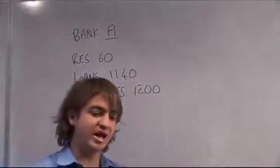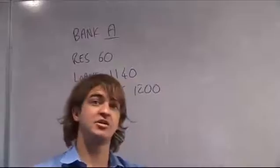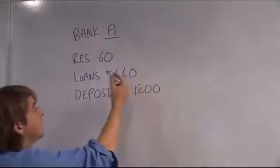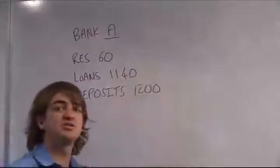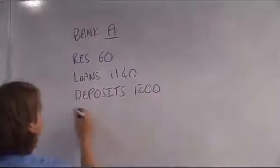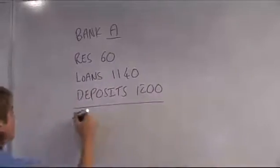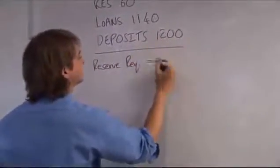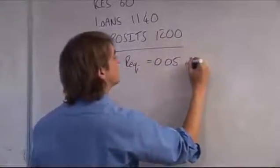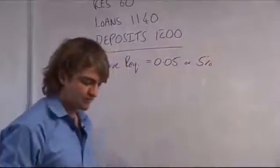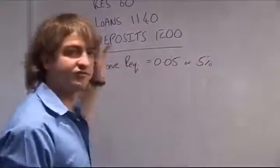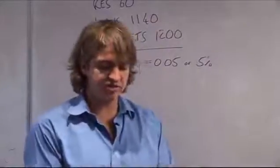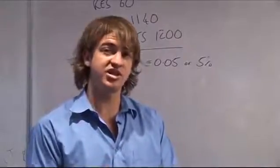So they have deposits of 1,200 — that's how much people could write a check for and take the money out. They have reserves of 60 from those deposits, and they've lent out the rest. Now, let's say the reserve requirement given by the reserve bank is equal to 0.05, or 5%. To calculate whether this bank has enough reserves, the reserve requirement must equal actual reserves divided by checkable deposits.